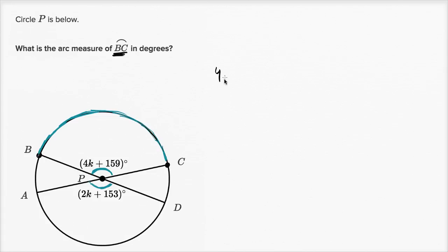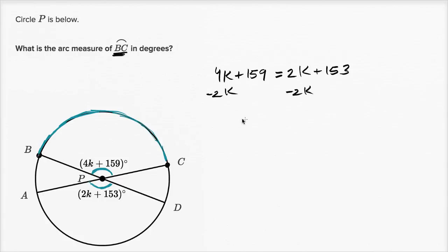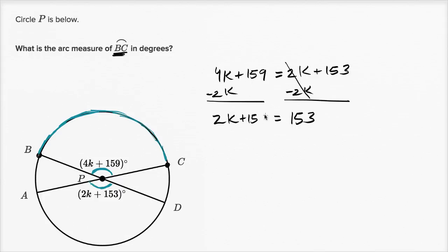So let's set these two measures equal to each other. We know that 4K plus 159 is going to be equal to 2K plus 153. Let's get all K terms on the left-hand side and all non-K terms on the right-hand side. Subtracting 2K from both sides, the right side is just 153, and the left side becomes 2K plus 159.